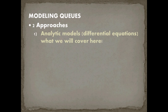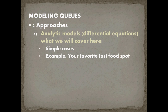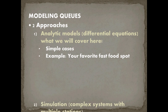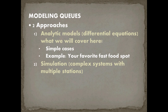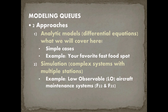To model a queue, there are two basic approaches. The first approach is analytic models, which use equations, and it's what we're going to do here. This works really well for simple cases, like almost every fast food restaurant, and does very well in even more complex cases. The second approach is simulation, which is necessary when you want to be very accurate or look in detail at more complex systems — for example, low observable aircraft maintenance systems like the F-22 and F-35, where the Air Force needed simulation to examine small portions of the system in relation to the entire complex maintenance process.